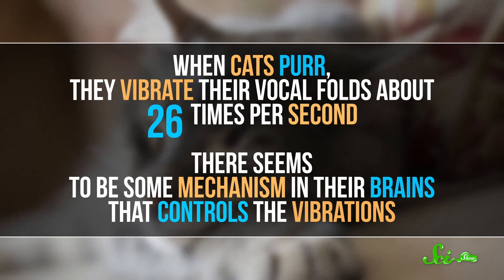When cats purr, they vibrate their vocal folds at about 26 times per second. There seems to be some mechanism in their brains that controls the vibrations. As they inhale and exhale, the vocal folds open and close, which is what makes the purring sound. It's like how you can make that motorboat sound by vibrating your lips, except they do it inside of them with their vocal folds.